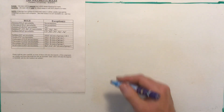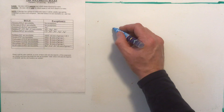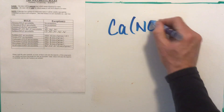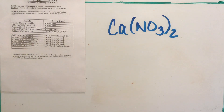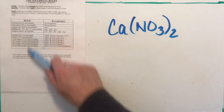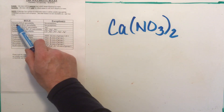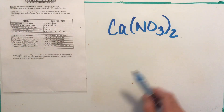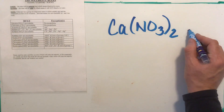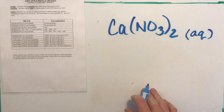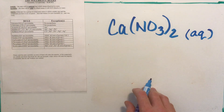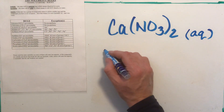Let's go over examples. We'll start with calcium nitrate. The rules are based on the second part of the compound, so for calcium nitrate I look at nitrates — right at the top of the table. It says nitrates are soluble with no exceptions. So calcium nitrate is soluble, which means it's (aq).